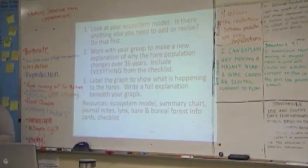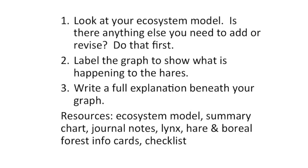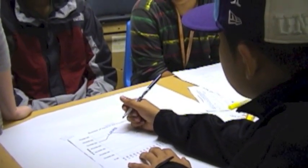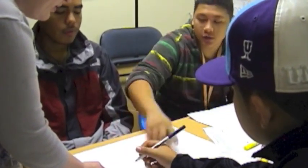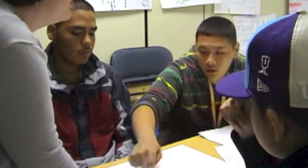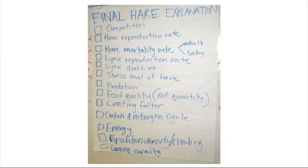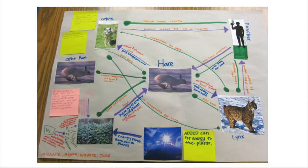I want you to look at your ecosystem model. That's the one that you cut out the picture to look for connections for. See if there's anything that you want to add or revise. Do that first. Then work with your group to make a new explanation of why the hair population goes through the cycle. Bethany circulates and points out gaps in students' thinking or challenges their causal stories developing in their explanations or their models in other ways. At the end of this lesson, students had completed a group explanation that incorporated more than a dozen big science ideas. They had also created final models that reflected more systems-level thinking.